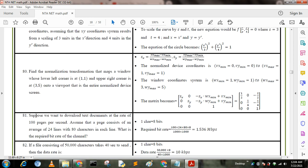Question number 81: suppose we want to download text documents at the rate of 100 pages per second. Assume that a page consists of an average of 24 lines with 80 characters in each line. What is the required bit rate of the channel? We know that one character equals 8 bits. Required bit rate equals 100 into 24 into 80 into 8 by 1000 into 1000 equals 1.536 Mbps. Here 100 into 24 into 80 into 8 converts into bits, then we divide by 1000 to convert into kilobits, and again divide by 1000 to convert into megabits. That is megabits per second. So we get the answer 1.536 Mbps.